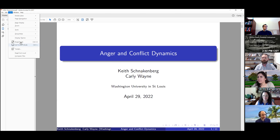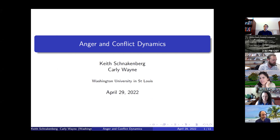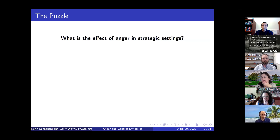Thank you. So this is a paper we've been working on for over a year, struggling to get the model exactly right and really incorporate how emotions function in politics and in life into a formal strategic model of political conflict. The main puzzle that spurred us to do this work is to understand how a behavioral assumption—anger—functions in a strategic setting.